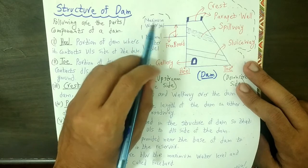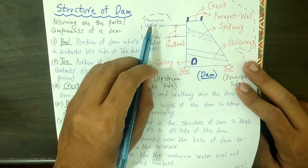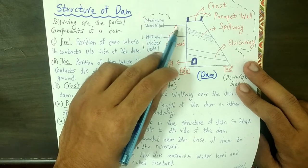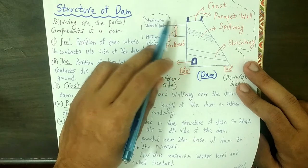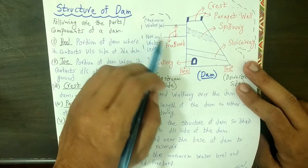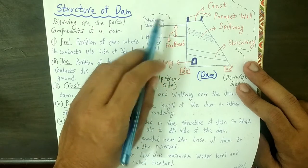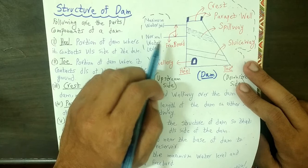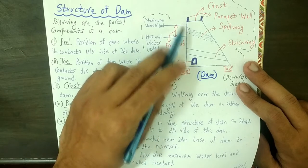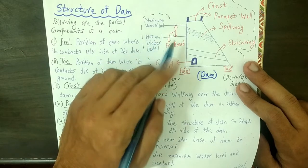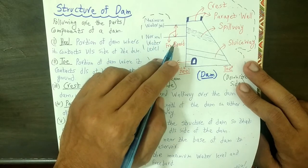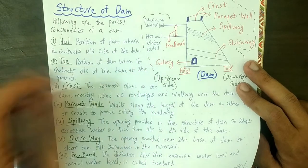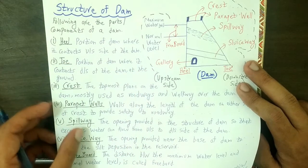The distance or difference between the maximum water level at the upstream side of the dam and the normal or minimum water level is known as freeboard. This is an important definition in the components of the dam.